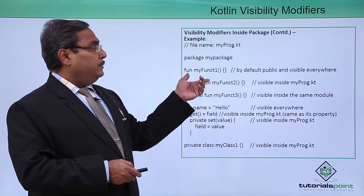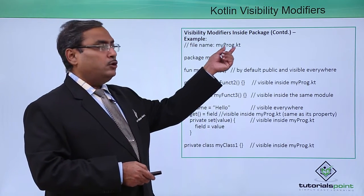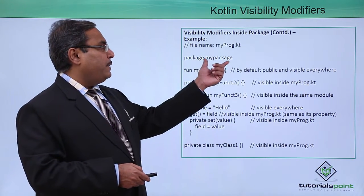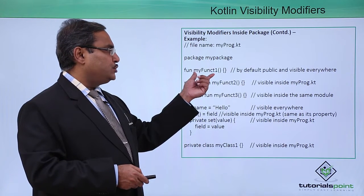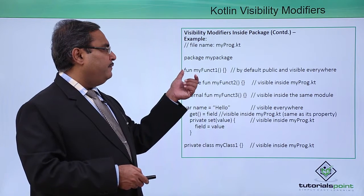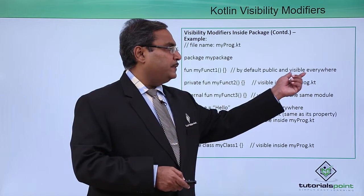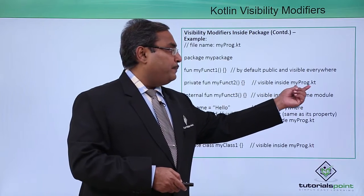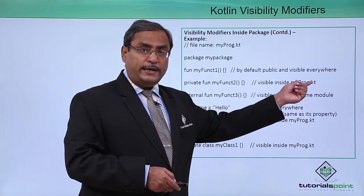Now let us go through an example. The program is named myprog.kt — .kt is the extension for Kotlin programs. Under the package 'mypackage', we have defined one function with no visibility modifier, so by default it will be public and visible everywhere. Another function is private, so it is visible only inside myprog.kt, within this Kotlin program only.